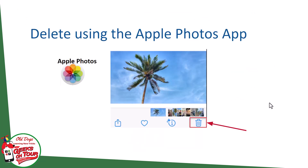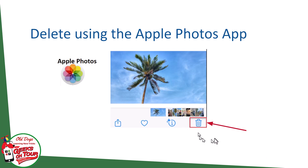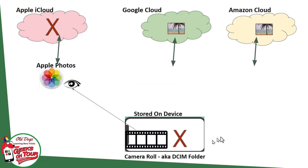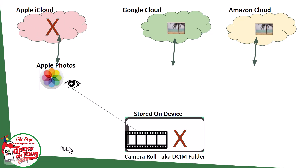Now I want to step you through what happens if you delete a photo using the Apple Photos app. On your iPhone you open up the standard Apple Photos, open a photo, and tap delete. It gets deleted from the device — the camera roll, the DCIM folder — and also from the Apple Cloud. But it doesn't touch the Google Cloud or the Amazon Cloud copies.